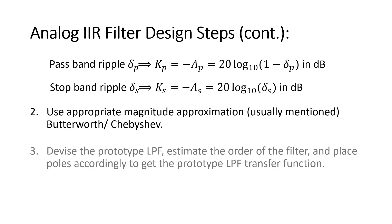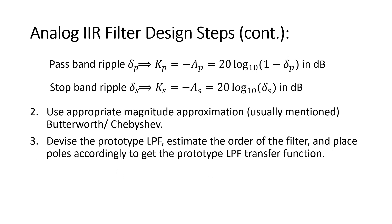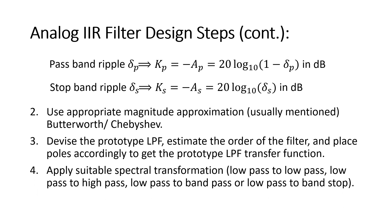The third step is to devise the normalized prototype low pass filter. Our design starts with designing this low pass filter even though we may wish to design a high pass, band pass, or band elimination filter. The word 'normalized' means the pass band edge is normalized to 1 radian per second. We estimate the order and place the poles to get the transfer function. The last step is to convert this normalized low pass filter to the desired filter type by applying suitable spectral transformation.